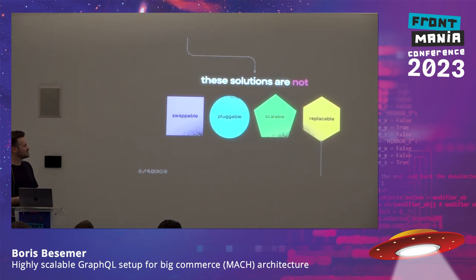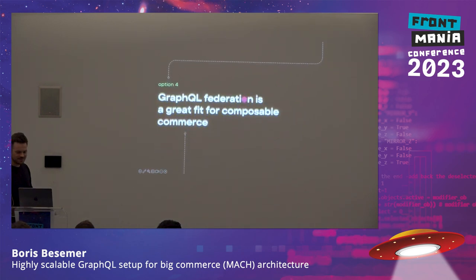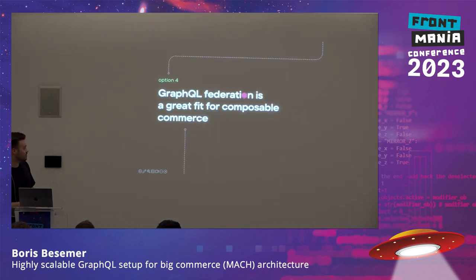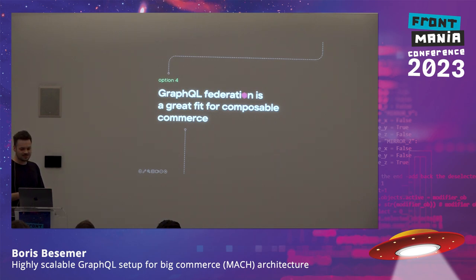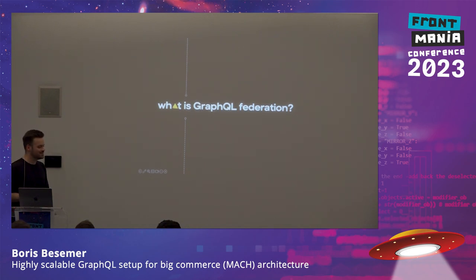So we've got three solutions, and none of these are swappable, pluggable, scalable, or replaceable. They might be good at one thing, but they're not good at all of them. We actually think that GraphQL Federation is a great fit for composable commerce. So what is GraphQL Federation actually?